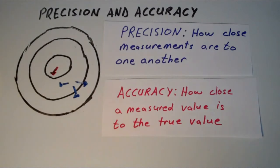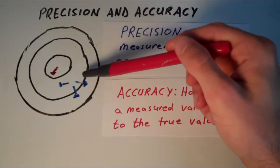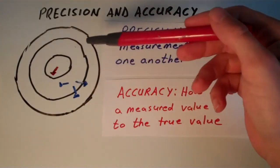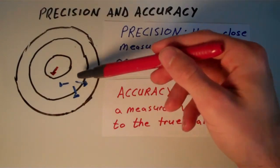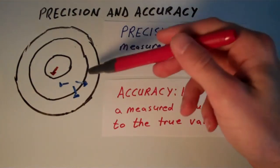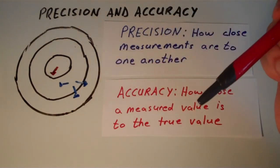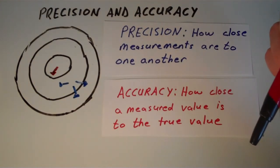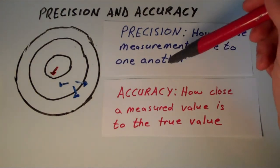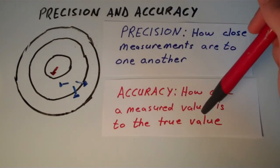So in the dartboard example, this is an example of these three blue darts here. That's sort of an example of measurements that are precise but not accurate. But then, how do we determine a series of measurements that is accurate but not precise?